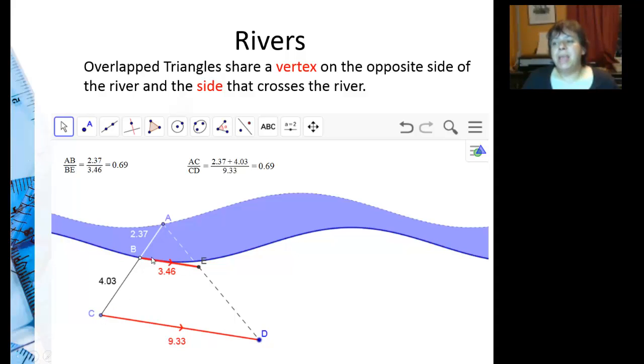Then I can pick any path out here, but the main thing is that this base here must be parallel to this base. Otherwise my triangles will not be similar. Why is that?